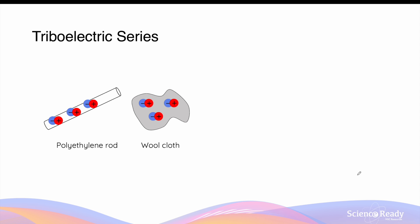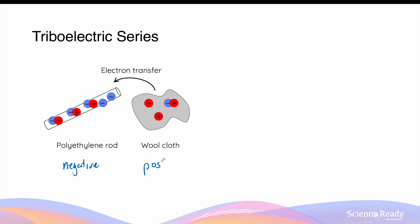For example, rubbing a polyethylene rod — a type of plastic — with wool cloth: wool cloth has a greater tendency to lose electrons compared to polyethylene, so electrons are transferred from the wool cloth into the polyethylene rod. As a result, the polyethylene rod becomes negatively charged while the wool cloth becomes positively charged.